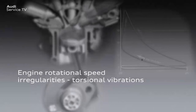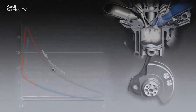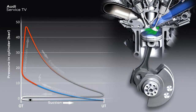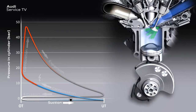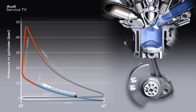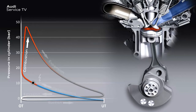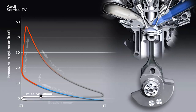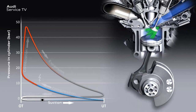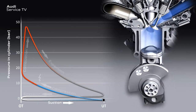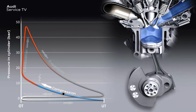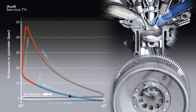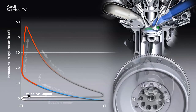What causes these engine rotational speed irregularities? On a reciprocating piston engine, the pressure gradient in the cylinder during the four cycles produces an uneven torque on the crankshaft. On each work cycle, the combustion of the fuel-air mixture greatly accelerates the crankshaft. During the other three cycles, the crankshaft decelerates, sometimes strongly and sometimes less strongly. To enable the engine to mainly run smoothly at lower speeds, a centrifugal mass — the flywheel — smooths out these rotational speed irregularities to a certain extent.